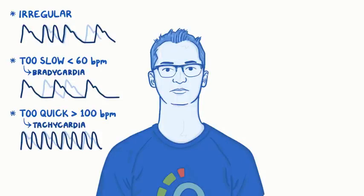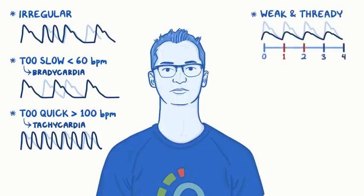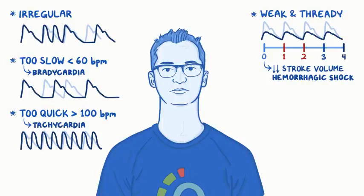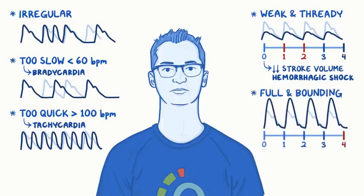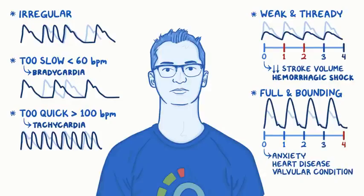Fred's pulse might also be weak and thready — a subjective 1 or 2 on the scale of 0 to 4 — which indicates low stroke volume, like hemorrhagic shock. On the flip side, Fred's pulse could be full and bounding, a subjective 4 on the scale of 0 to 4, which could be from anxiety, heart disease, or valvular conditions.